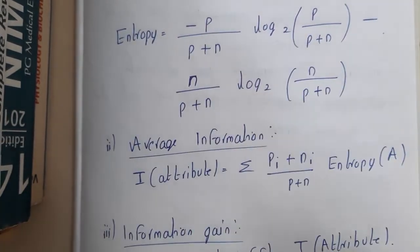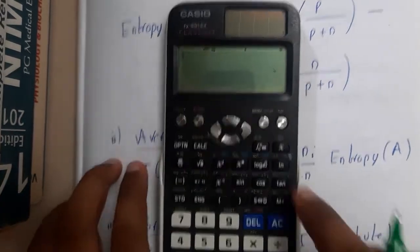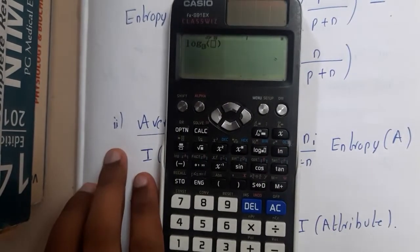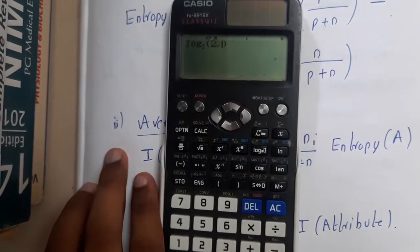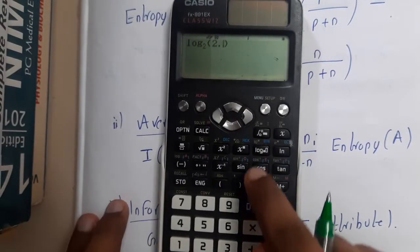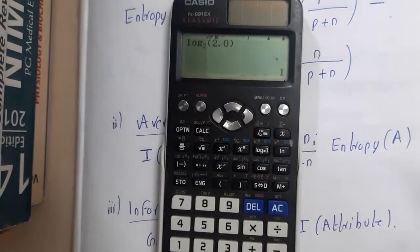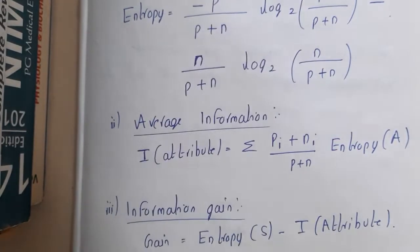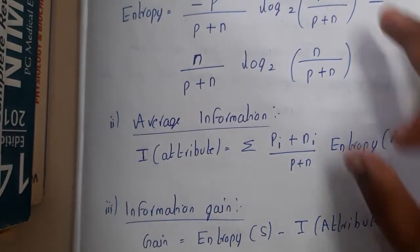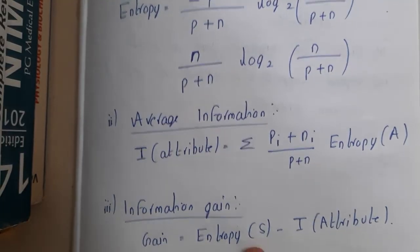You need to use a log calculator. In the calculator, you will enter the base and the value — for example, log base 2 of 2.0 gives 1. In that way, you will be solving it. Using a calculator is mandatory because you need the values in an accurate way.